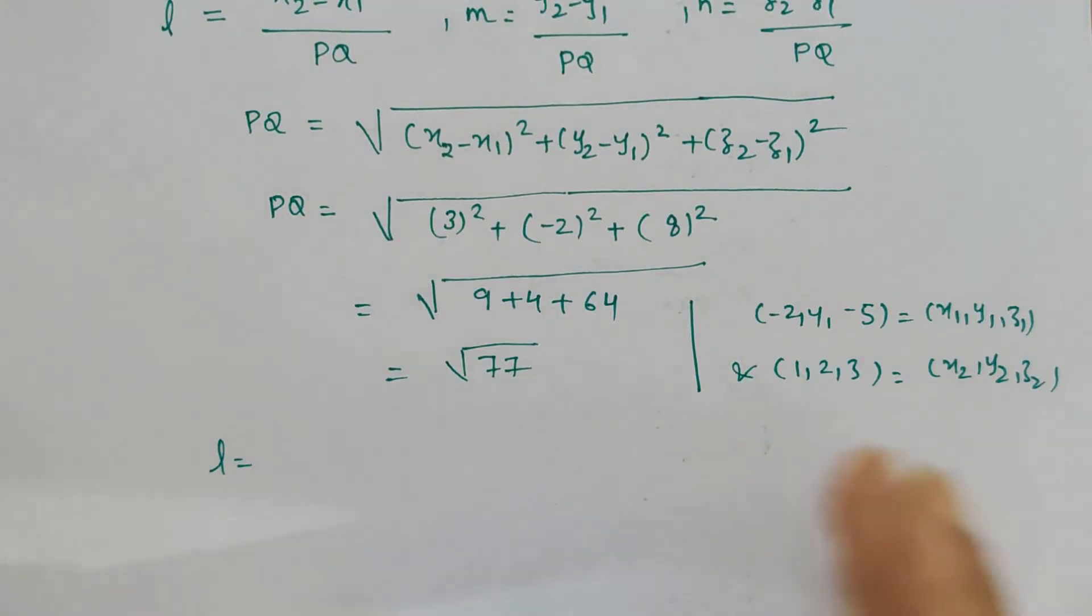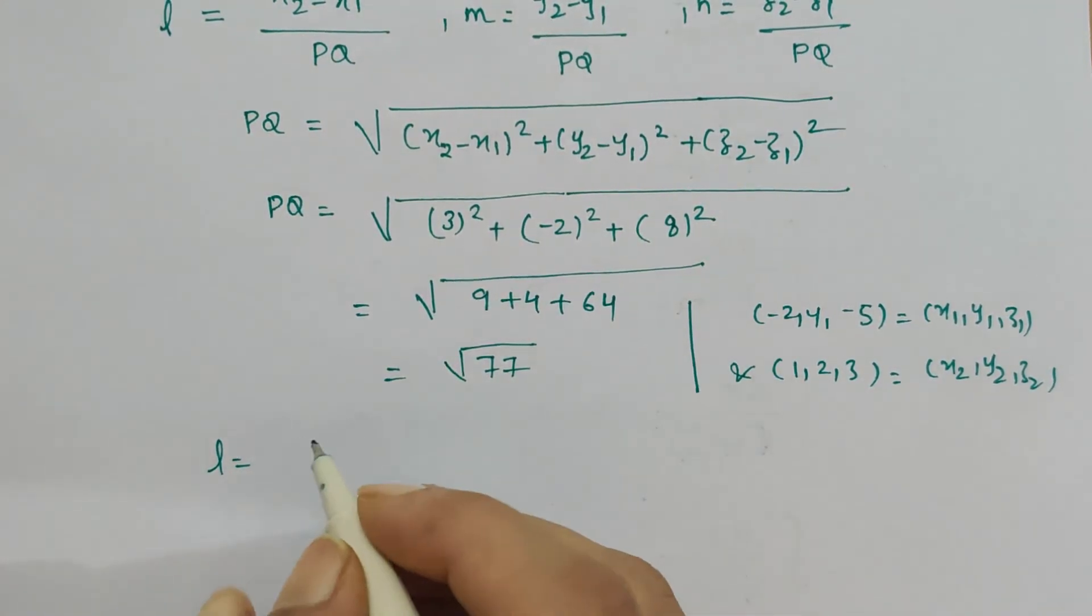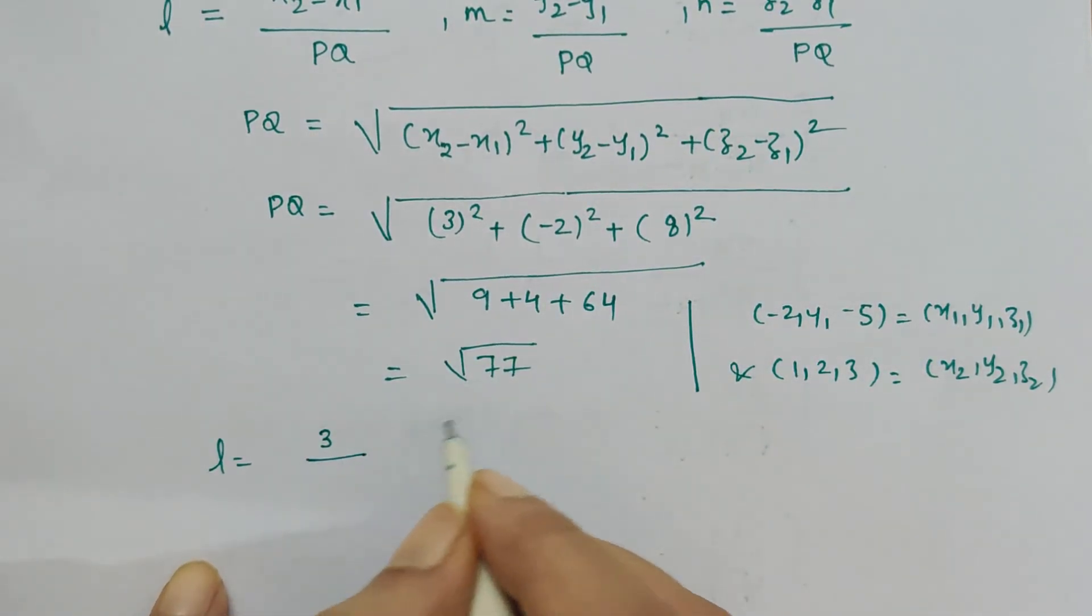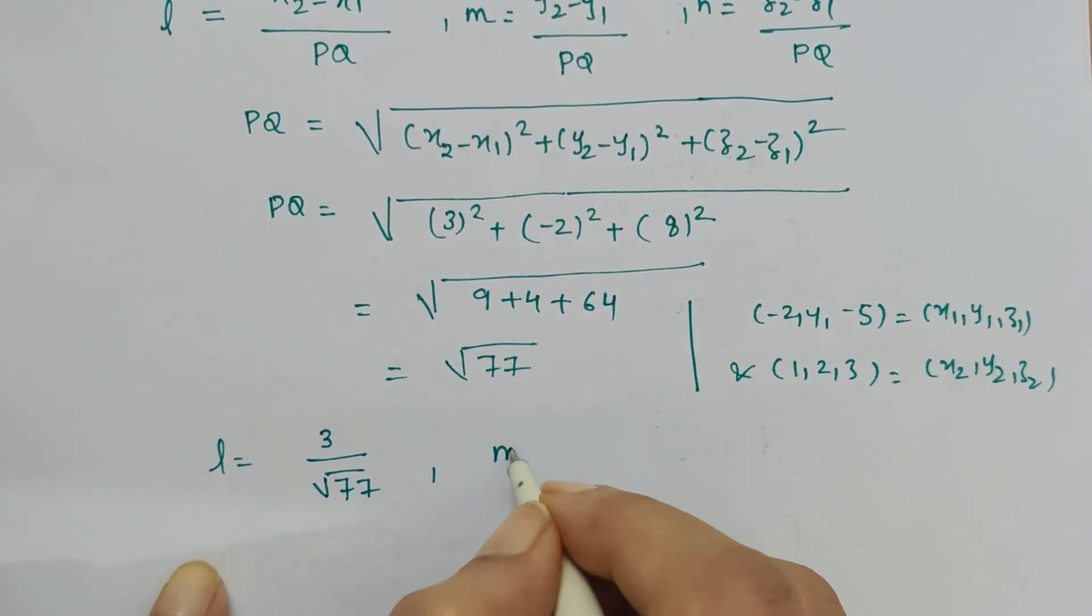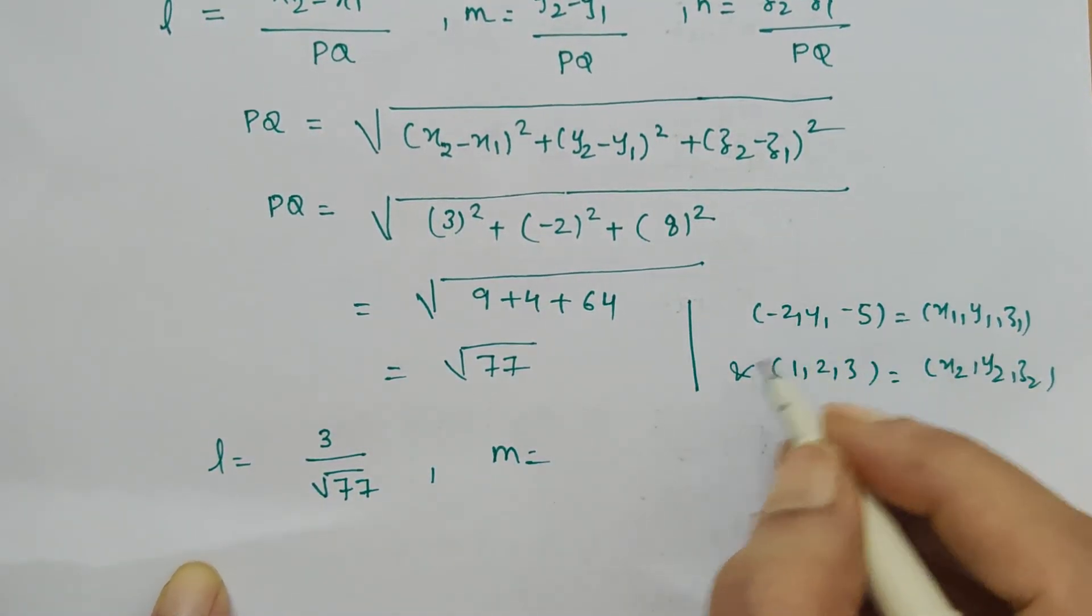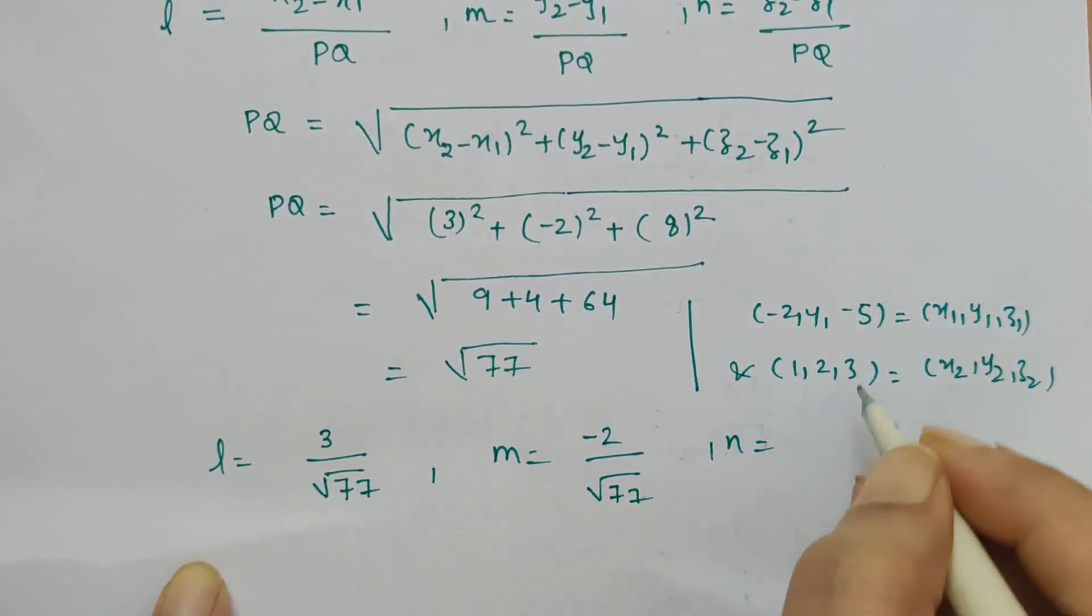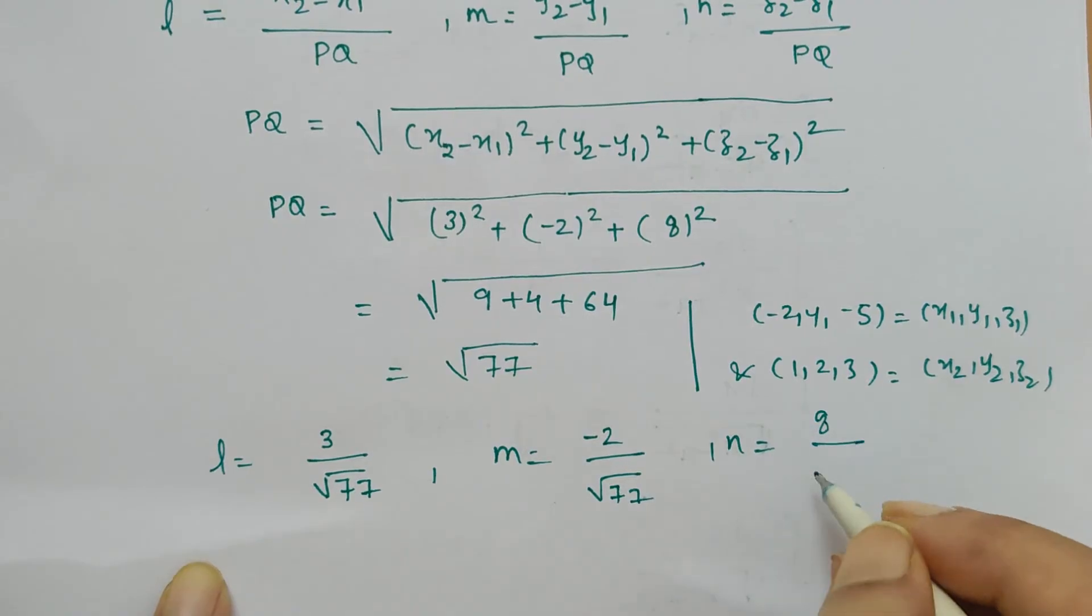x2 minus x1, 1 minus minus 2 is 3 upon pq which is under root 77. Then m is y2 minus y1, 2 minus 4 is minus 2 upon under root 77. Then n, z2 minus z1, that is 8 upon under root 77.